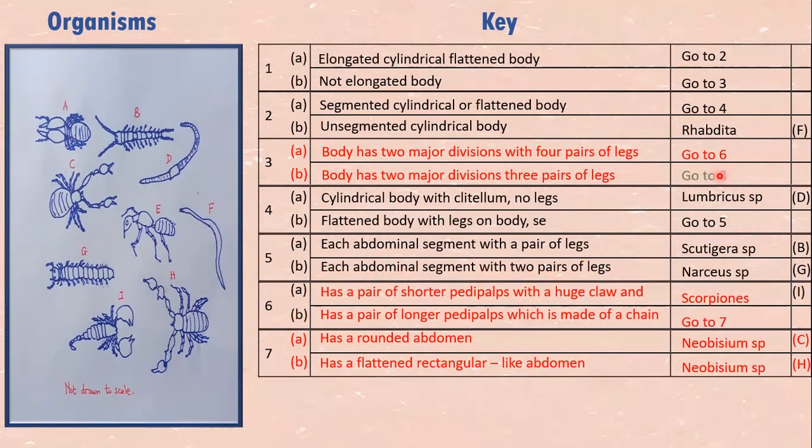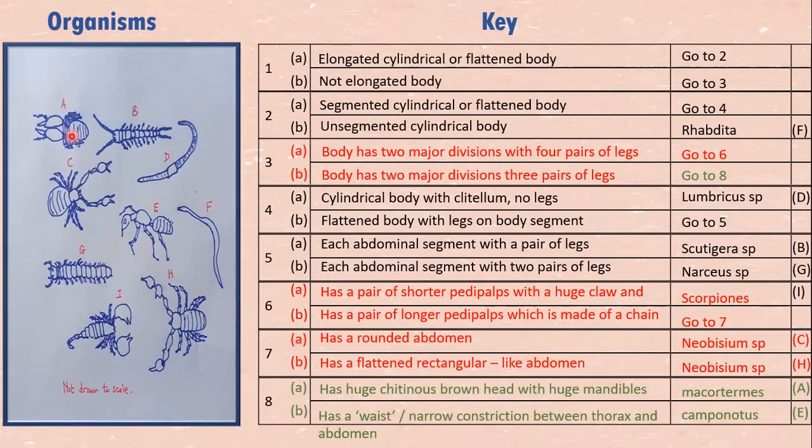So we are going to sort them and go to eight. A and E. A has huge brown head with thick mandibles. It's termite, Macrotermes. And then we left with E to give a key to. It has a narrow waist between the thorax and the abdomen, Camponotus.